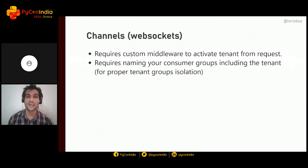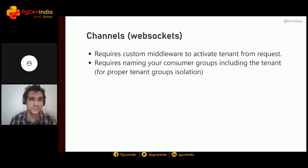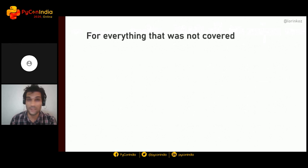For Django Channels, this requires a bit more work. You need a custom middleware to activate the tenant from requests — Channels requires different middlewares since it operates at a different level with protocols. You also need to name your consumer groups with a string representation of the tenant, similar to the cache approach, to prevent messages from leaking across tenants. This isn't easily found in packages, so you'll likely need to implement it yourself.